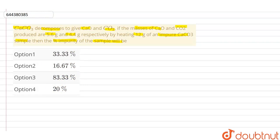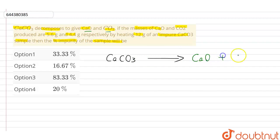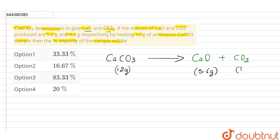Let us solve this numerical. First, we will write the equation of decomposition of calcium carbonate: CaCO3 decomposes to give CaO, calcium oxide, and CO2, that is carbon dioxide. The calcium carbonate mass is 12 grams, calcium oxide mass is 5.6 grams, and carbon dioxide mass is 4.4 grams.